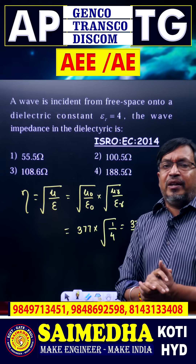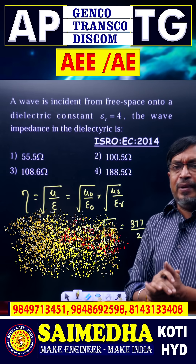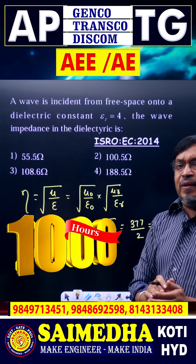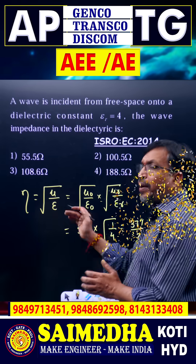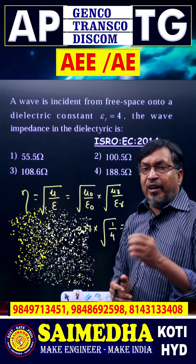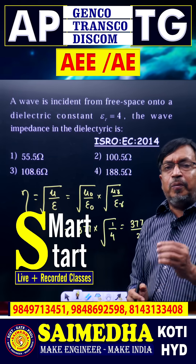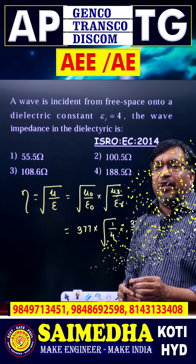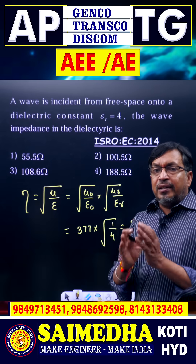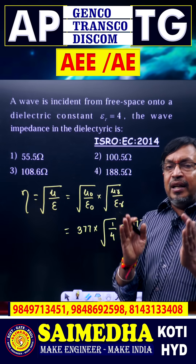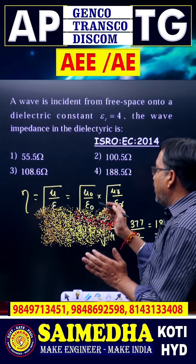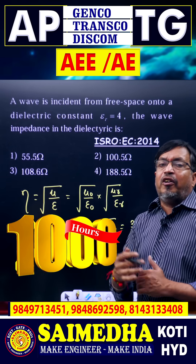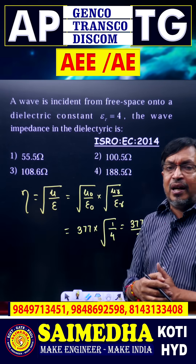Substituting the electromagnetic wave equation in a medium, the eta equation becomes the square root of mu by epsilon, where mu equals mu-not times mu-r, and epsilon equals epsilon-not times epsilon-r. Then separating into two parts: eta equals the square root of mu-not by epsilon-not, multiplied by the square root of mu-r by epsilon-r.